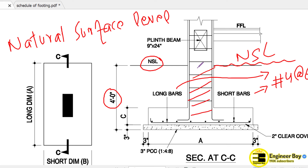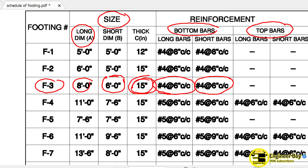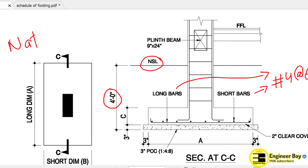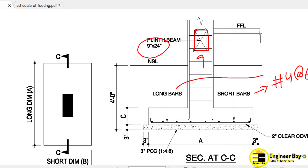Now above this, as you can see, we have the column, represented by this rectangular thing. The dimensions are not known over here because the schedule is only for the footing. There must be a separate schedule for the columns. In another video, we will explain the drawing related to columns. In the same drawing, we have a plinth beam that is shown — this is plinth beam, which is 9 by 24 inches. This is the floor formation level — the top level of the floor.